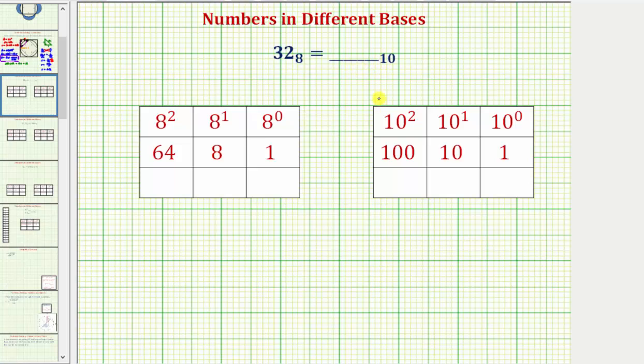We know when a number is written in base 10, the place values are based upon powers of 10. When a number is written in base eight, the place values are based upon powers of eight.